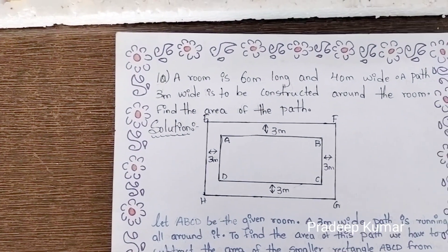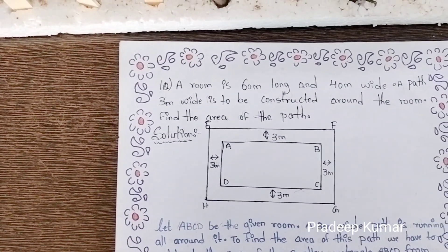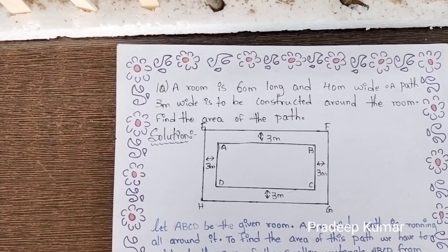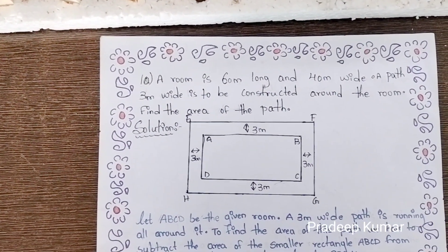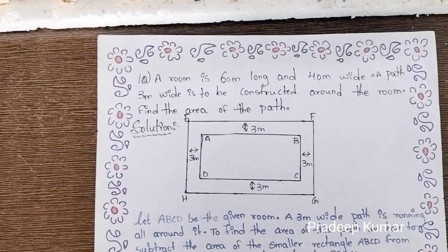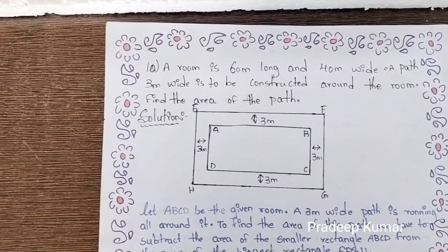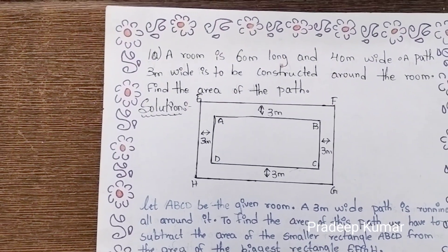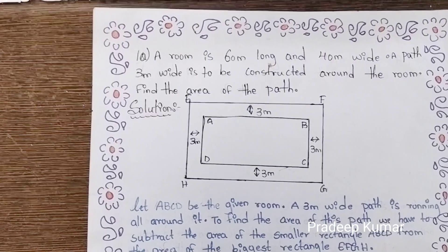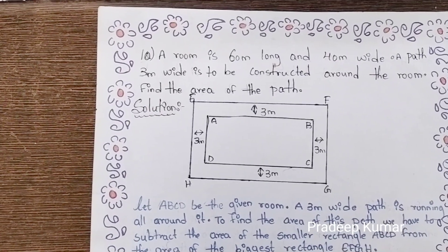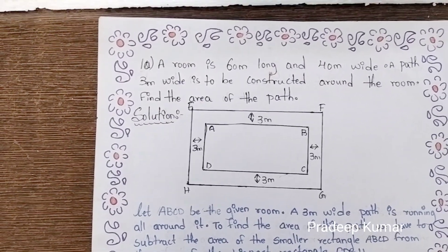A room is 60 meters long and 40 meters wide. A path 3 meters wide is to be constructed around the room. Find the area of the path.